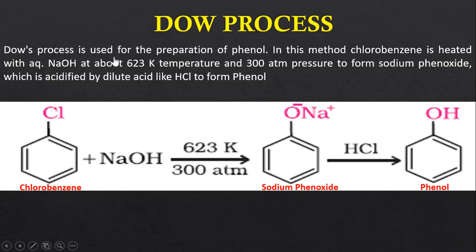Dow Process is used for the preparation of phenol. In this method, chlorobenzene is treated with NaOH at 623 Kelvin temperature and 300 atm pressure to form sodium phenoxide, which is then acidified with HCl to form phenol.